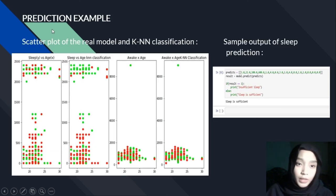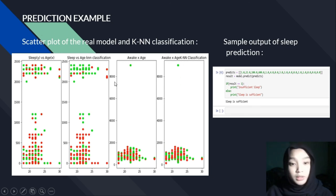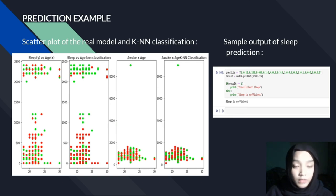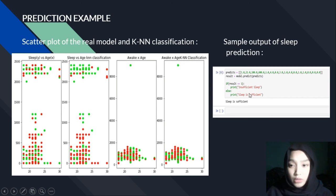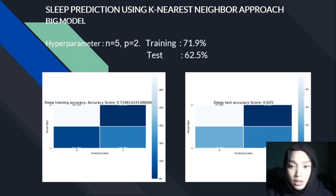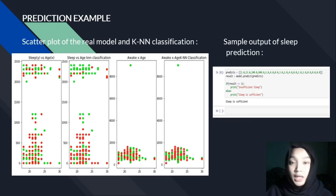In the prediction example, we get the plot of the model and its classification. We can say that the model could predict well for sufficient and insufficient sleep. This is the sample output of sleep prediction — it shows the result as sufficient. The overall model accuracy is 62.5%.